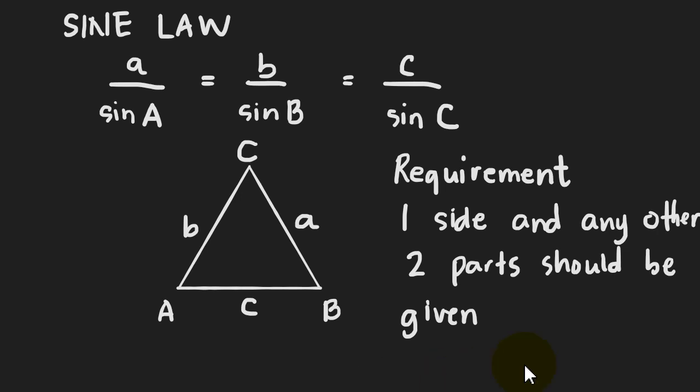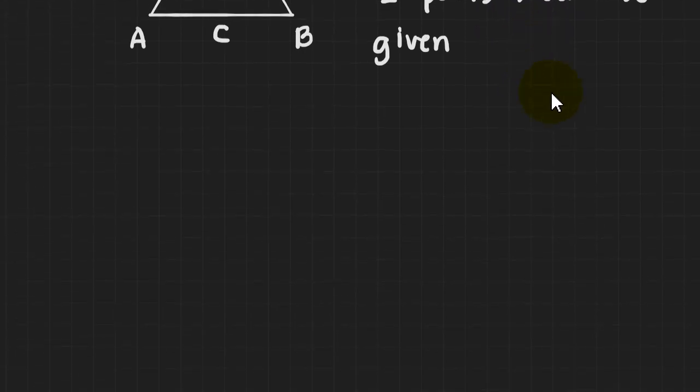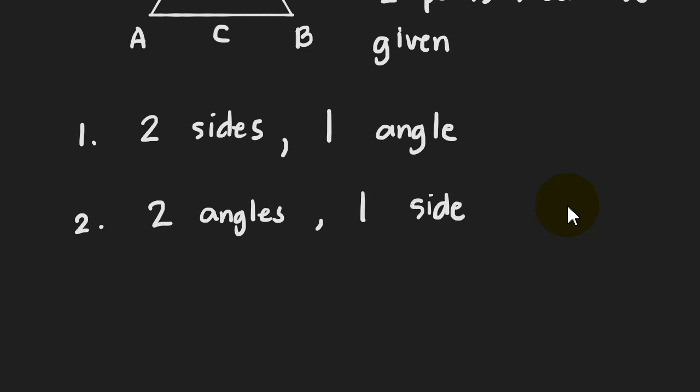Specifically, the sine law can be used for two cases. The sine law - first, we can use it if the given are two sides and one angle. This is the first case. And then the second case: two angles and one side. These are the two cases where we can use the sine law.